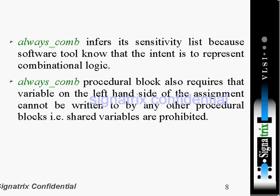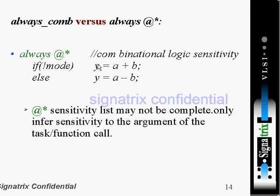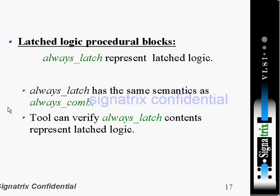The always_comb procedural block also requires that variables on the left-hand side of assignments cannot be written to by any other procedural blocks — shared variables are prohibited. Comparing always at star versus always_comb: with always at star, if not mode we assign one statement, else subtractor. The sensitivity list with always at star may not be complete — it only infers a sensitivity list to the arguments of task or function calls for combination logic.